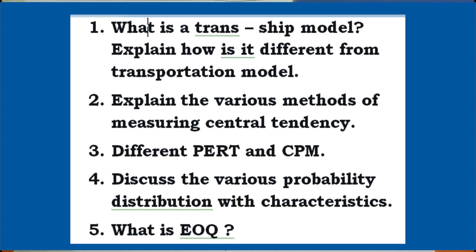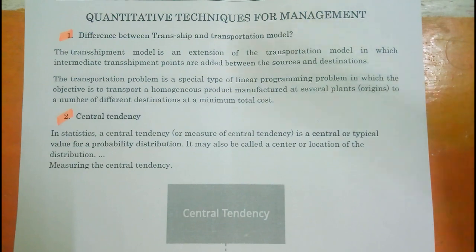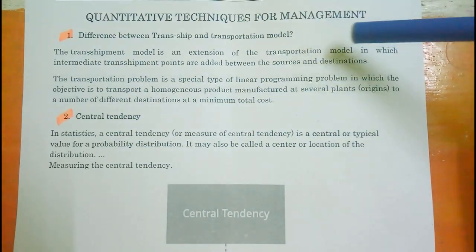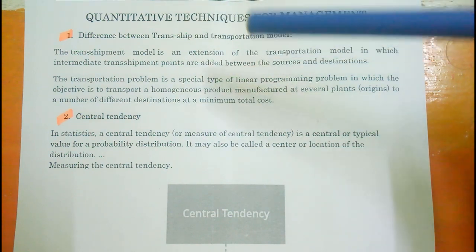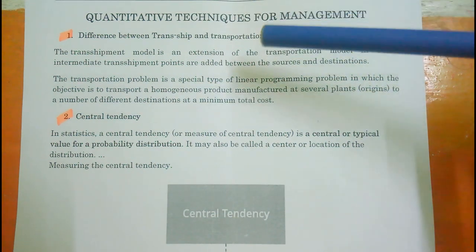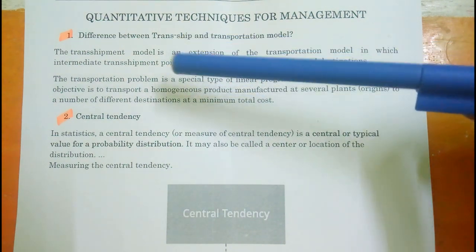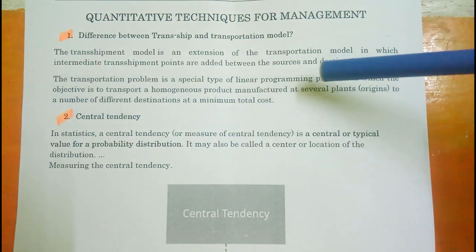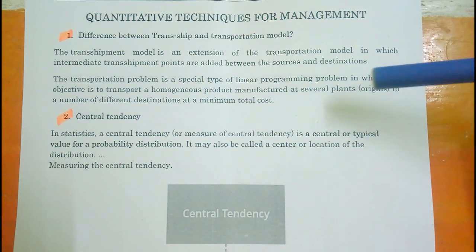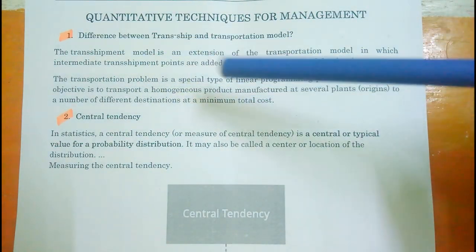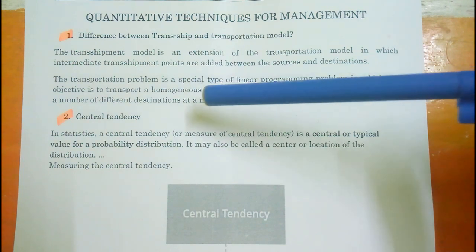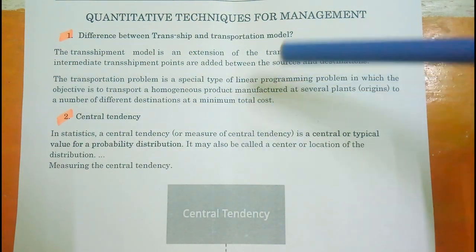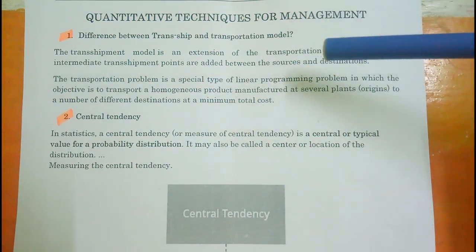Question 1: Differences between Tranship and Transportation Model. The Tranship Model is an extension of the Transportation Model in which intermediate transhipment points are added between the source and the destinations. Transportation problem is a special type of linear programming problem where the objective is to transport a homogeneous product manufactured at several plants to different destinations at a minimum total cost.